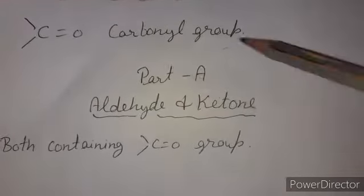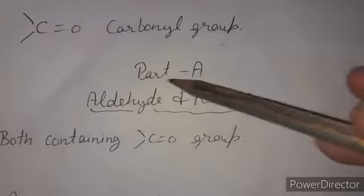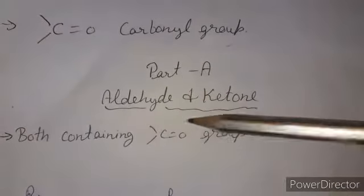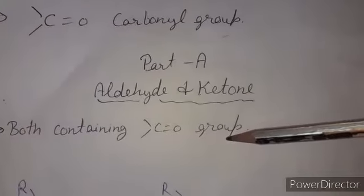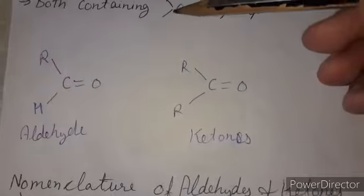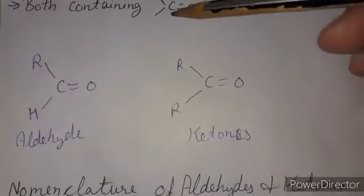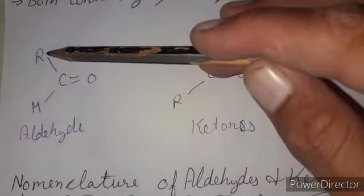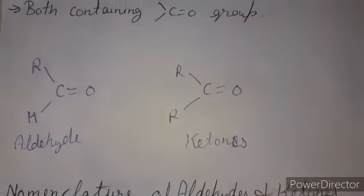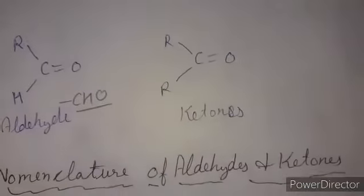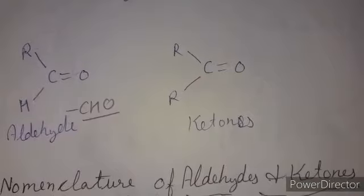We start Part A: aldehydes and ketones. Both aldehydes and ketones contain a carbonyl group. If we attach one hydrogen atom to the carbonyl carbon and on the other side we attach hydrogen or an alkyl group, we obtain the aldehyde functional group — CHO — which is a terminal functional group.